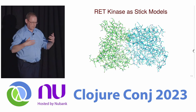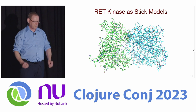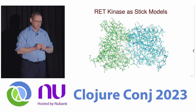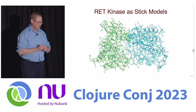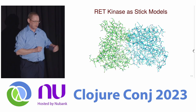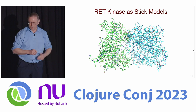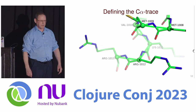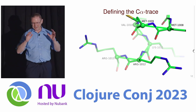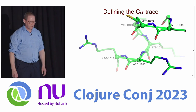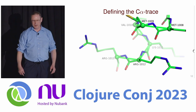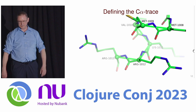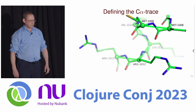This is a van der Waals representation of the 3,000 atoms in the protein: spheres centered on each atom scaled according to the van der Waals radius. Another representation shows sticks linking pairs of atoms representing bonds. We will focus on the C-terminus of our RET kinase domain and use a C-alpha trace representation, which is often used when comparing overlays of structures and will be used throughout the rest of this talk.